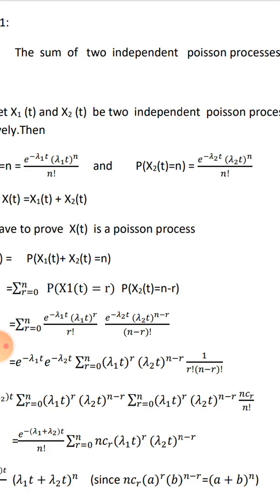Substituting: sigma r equals 0 to n of e raised to minus λ1t times (λ1t)^r divided by r factorial, into e raised to minus λ2t times (λ2t)^(n minus r) divided by (n minus r) factorial.